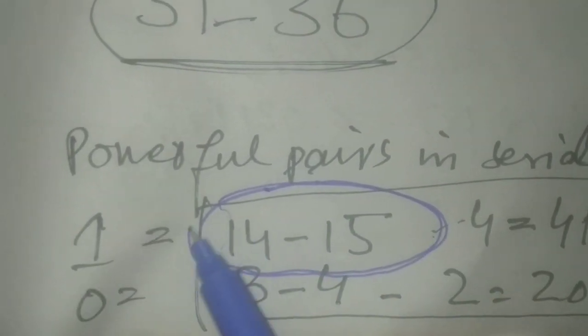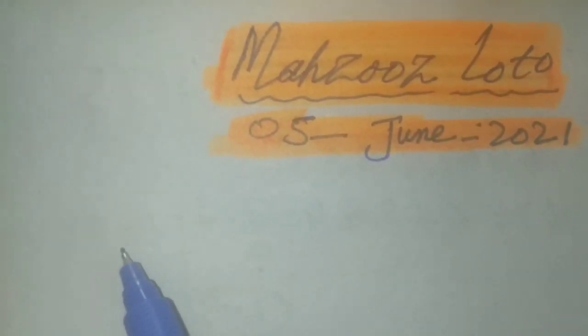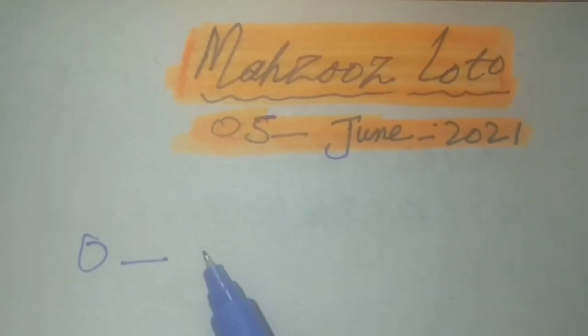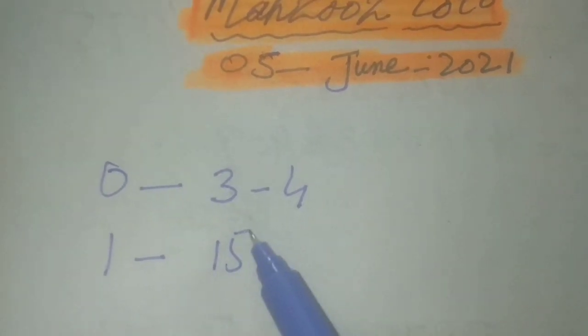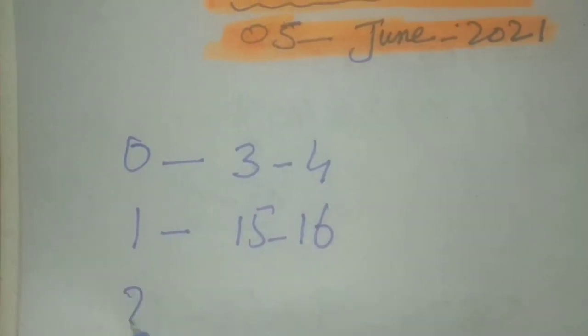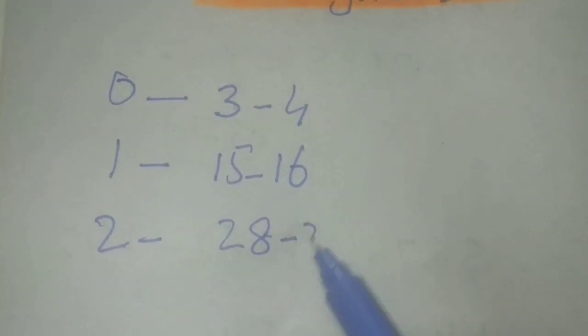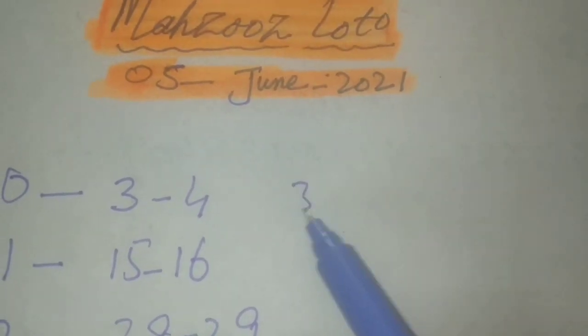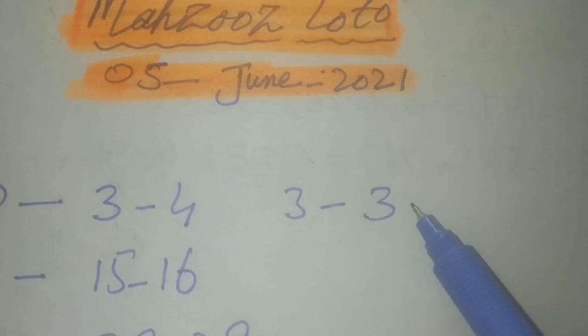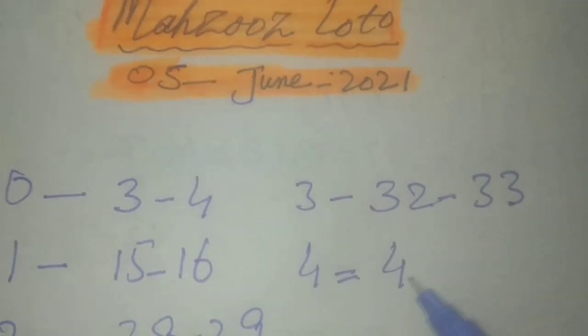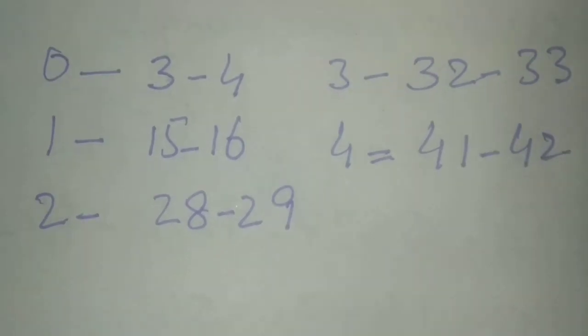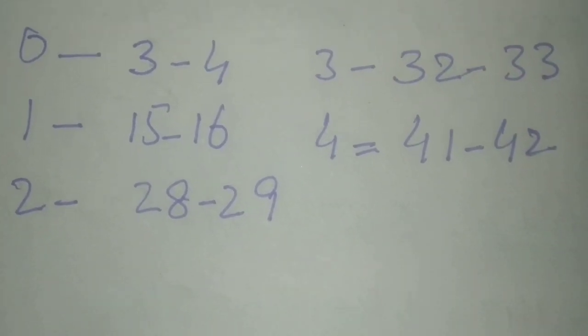For this draw, if pairs will come in serial, these pairs are powerful according to my guess: in 0, 3 and 4; in 1, 15 and 16; in 2, 28-29; in 3, 32 and 33; in 4, 41 and 42. These are powerful pairs if the pairs will come in serials.